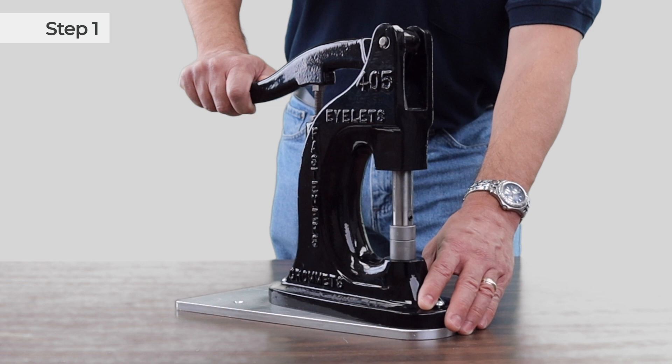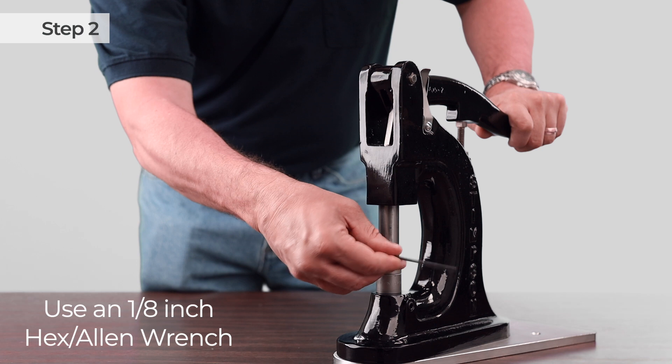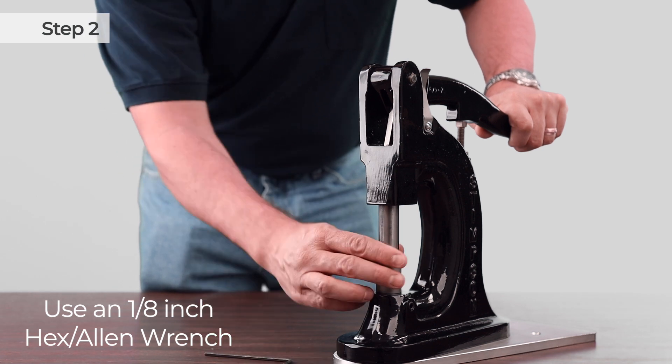Once the handle is down, use an 8 inch hex or allen wrench to loosen this set screw at the front of the machine until the top set comes out. You will need to raise the handle a bit to remove the tool and spring completely.